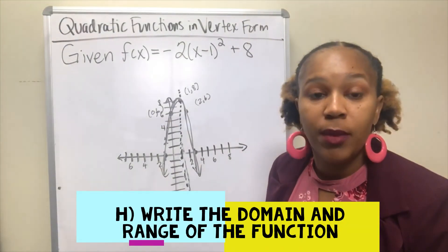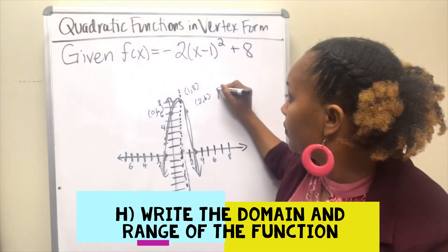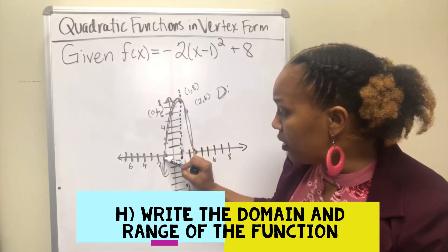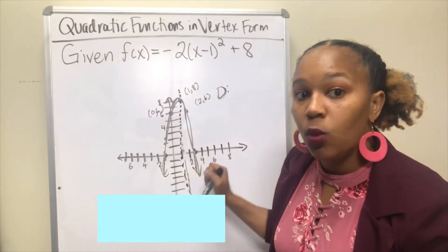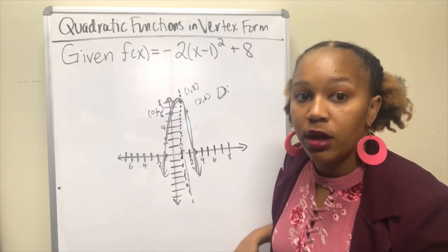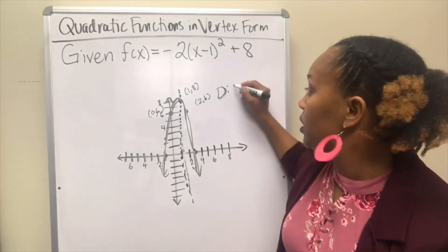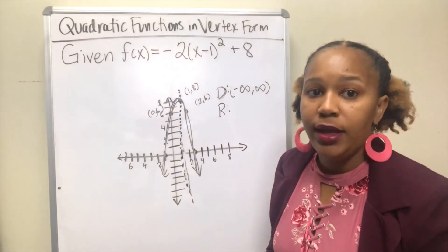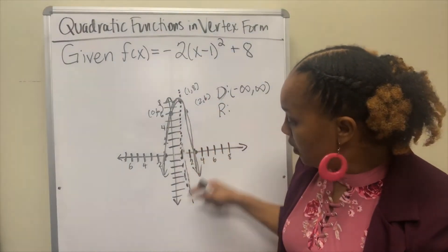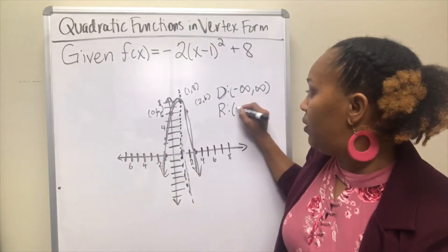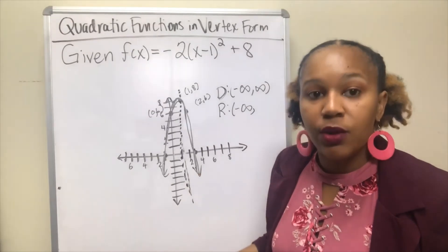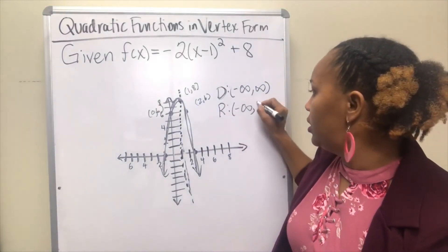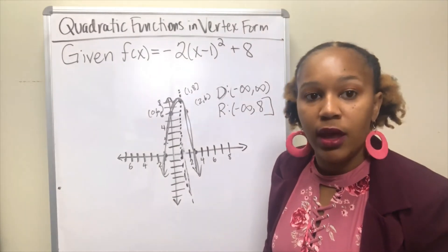For part h, we write the domain and range. For the domain, the graph continues to get wider and wider in both directions as it goes down, so the domain is negative infinity to positive infinity. For the range, the smallest y-value approaches negative infinity as the arrows go down, and the largest y-value is 8 at the vertex. So the range is negative infinity to 8, with 8 included in brackets since it is a point on the graph.